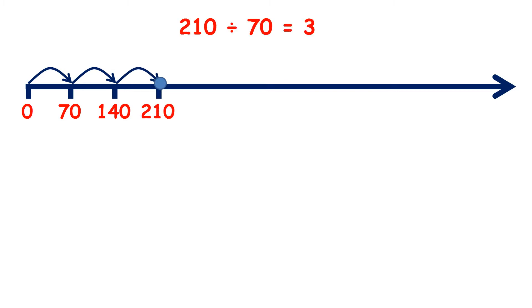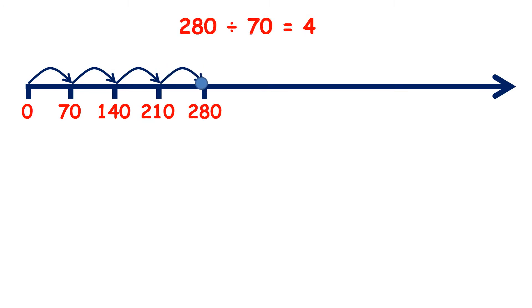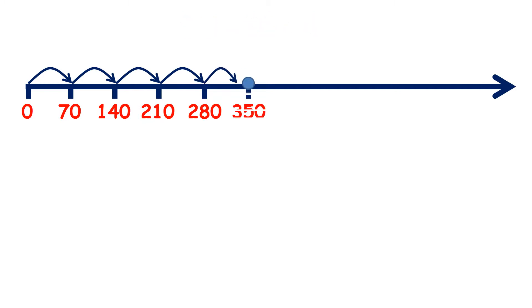210 divided by 70 is 3. 280 divided by 70 is 4. 350 divided by 70 is 5.